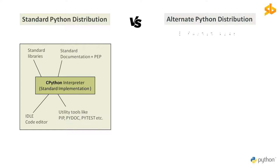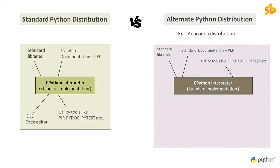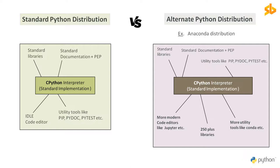Anaconda is one such alternative distribution, popular for building data science applications. It is developed and maintained by Anaconda Incorporation, founded by Peter Wang and Travis Oliphant in 2012. They took the standard CPython interpreter and the standard Python libraries and repackaged them by including more specialized libraries, tools, and code editors useful for building data science applications. In addition to Python, Anaconda also provides support for R programming language. We get all of them automatically installed when we install Anaconda distribution, and we will explore and set it up later in the course.